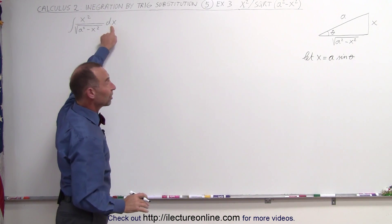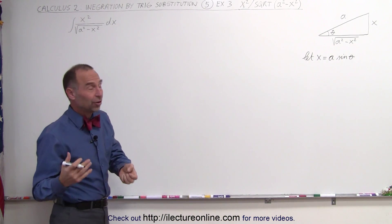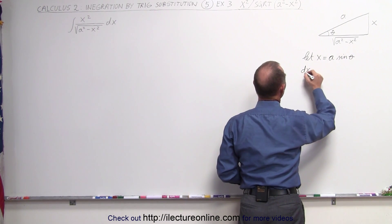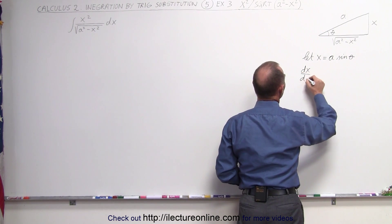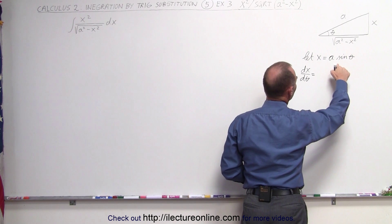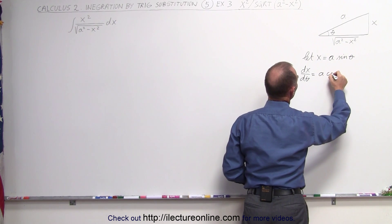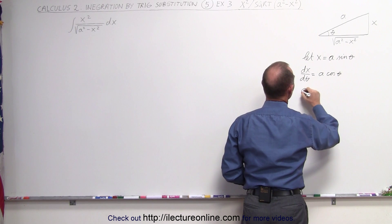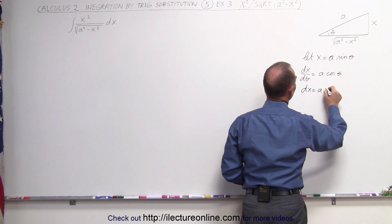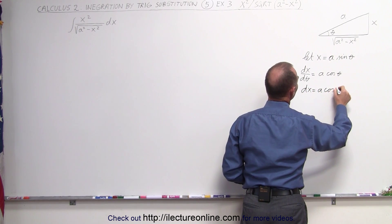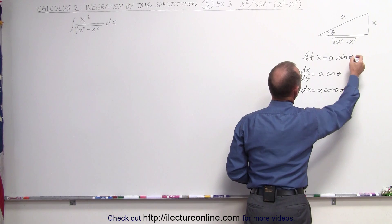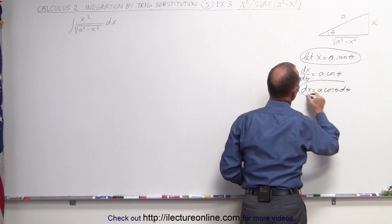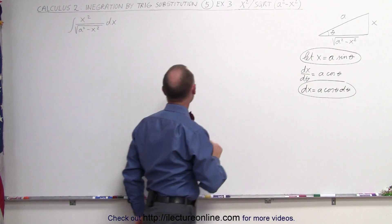And since we have a dx here, we might as well solve for dx as well. We're going to take the derivative with respect to theta: dx/dθ is equal to the derivative of a·sin(θ), which is a times the cosine of theta. So dx can be written as a times the cosine of theta dθ. We're going to make this substitution in the integral and see what we get.